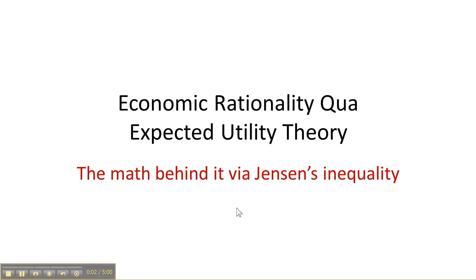This is a micro lecture on economic rationality as represented by expected utility theory, the quintessence of economic rationality, and it's about the math behind it and using Jensen's inequality to demonstrate risk aversion.